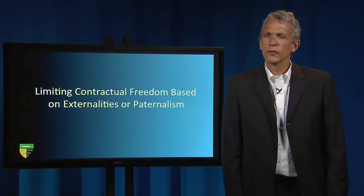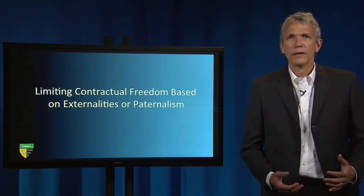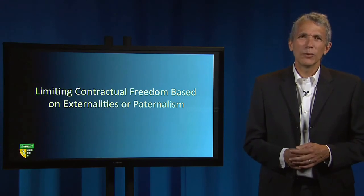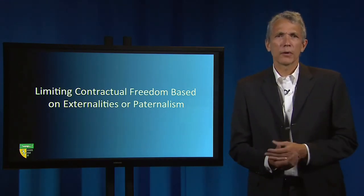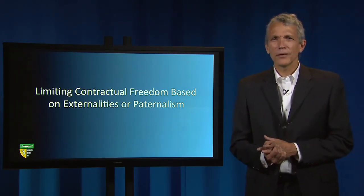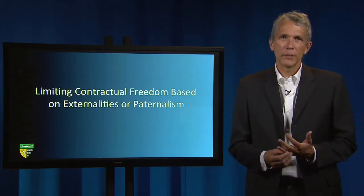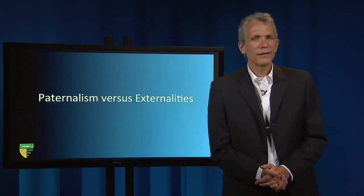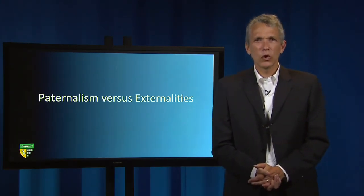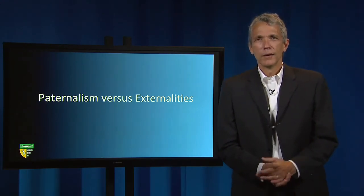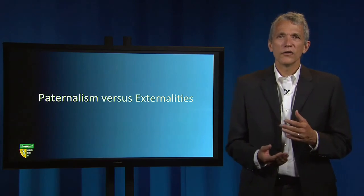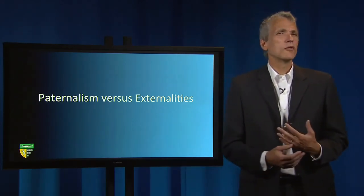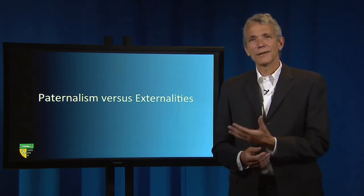The law can limit contractual freedom by prohibiting certain kinds of contracts — thus, federal law prohibits the sale of human organs. These laws create inalienable rights and duties. The law can also limit contractual freedom by prohibiting certain terms in agreements, creating mandatory or immutable rules. Mandatory rules, for example, prohibit unconscionable terms or place mandatory ceilings on the amount of liquidated damages. There is a surprising consensus among academics that there are only two normative justifications for restricting freedom of contract: immutable rules are justifiable if society wants to protect parties within the contract, or parties outside the contract. The former justification turns on paternalism, the latter on externalities.